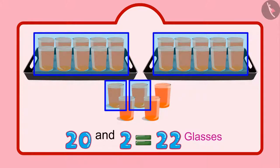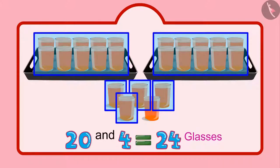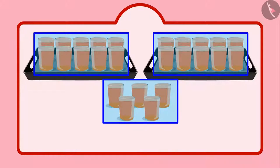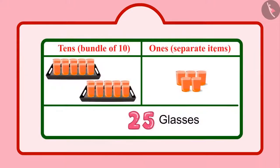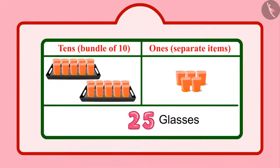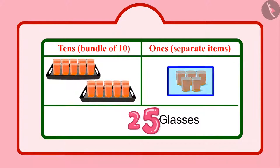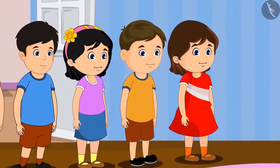That makes it 21, 22, 23, 24, 25. Chotu distributed 25 glasses of sherbet. Children, in these 25 glasses, 2 means 2 tens and 5 means 5 units.